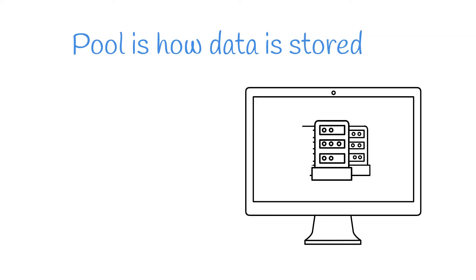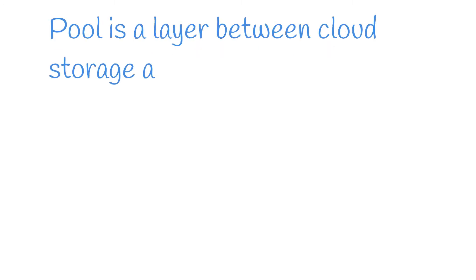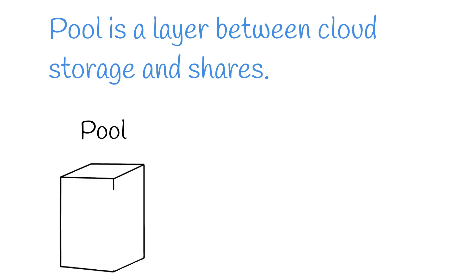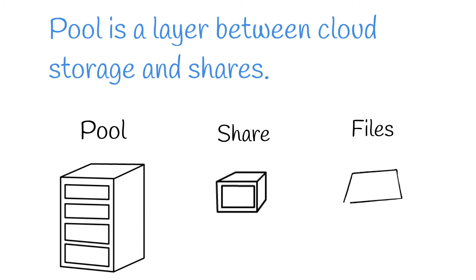A pool is how data is stored. Simply put, pools are similar to storage volumes — different storage volumes may have different redundancy factors such as RAID levels. A pool is a layer between cloud storage and shares. A pool is like a storage cabinet, inside which are the shares. Shares are just top-level folders.